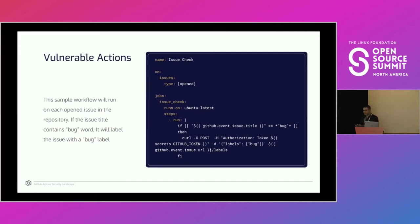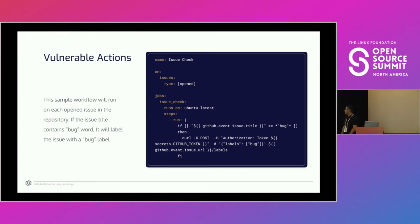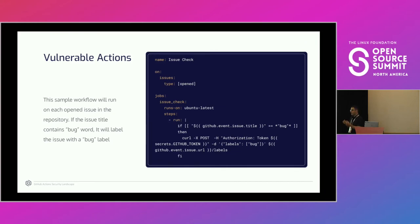Now that we have some background on GitHub Actions, let's present the issues we found. We have a simple workflow triggered whenever a new issue is created. Issues are used to track bugs or feature requests. This workflow contains one job and runs a bash script that checks whether the issue title contains the word 'bug' — and if so, invokes the GitHub API to update the issue label with a label called 'bug'. It's a simple workflow that could help maintainers triage issues.